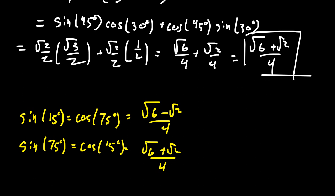To summarize: sine of 15 degrees, which equals cosine of 75 degrees, is the square root of 6 minus the square root of 2 over 4, found in the previous video. And sine of 75 degrees, which equals cosine of 15 degrees, is the square root of 6 plus the square root of 2 over 4. This makes sense since sine of 75 should be close to 1, while sine of 15 should be close to 0, and cosine does the exact opposite.